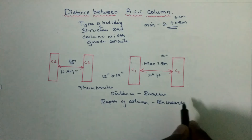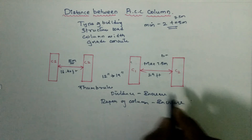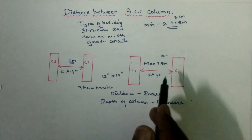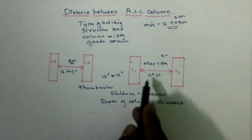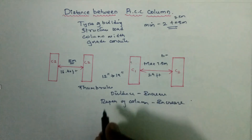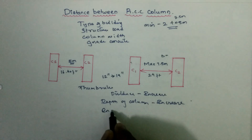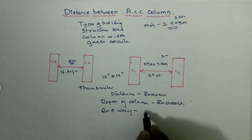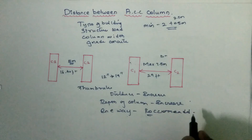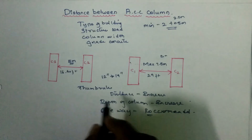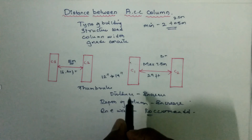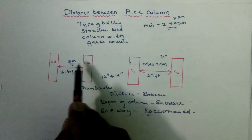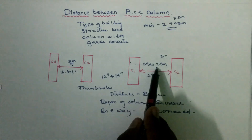This is the thumb rule: if you increase the cross-section depth, the length and distance between columns will increase. The standard span length is 5 meters, and the maximum is 7.5 meters. Thank you.